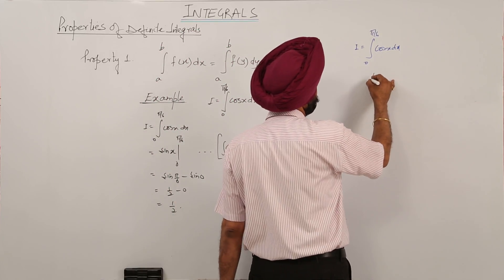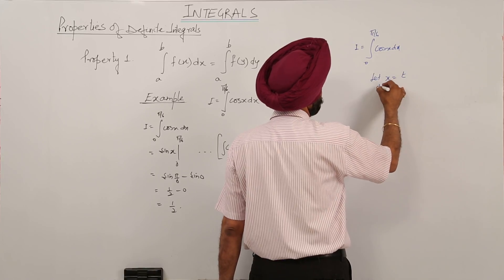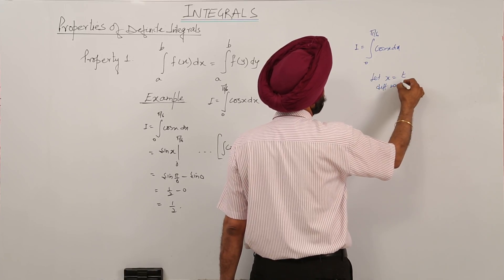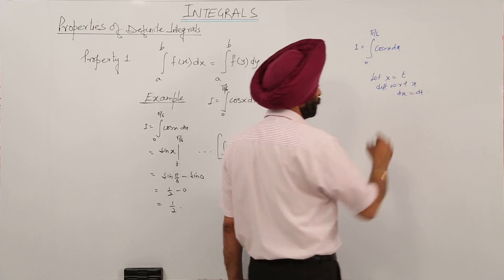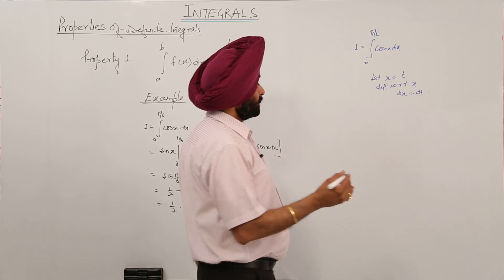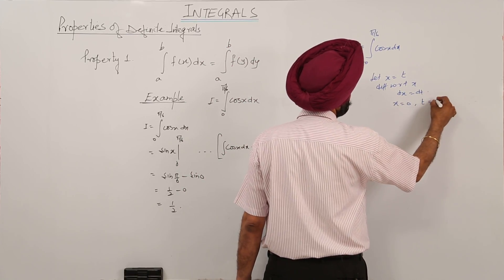Now let x is equal to t differentiating with respect to x dx is equal to dt. Changing the limits when x is equal to 0, t is equal to 0.